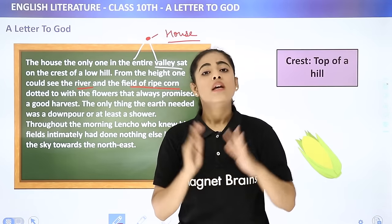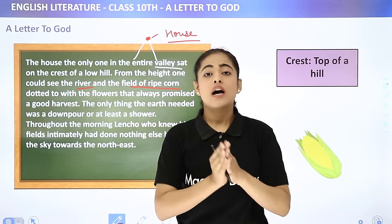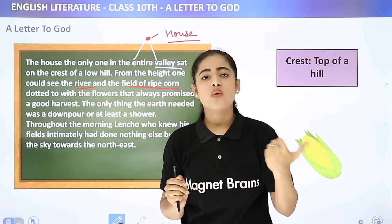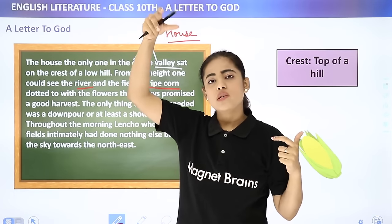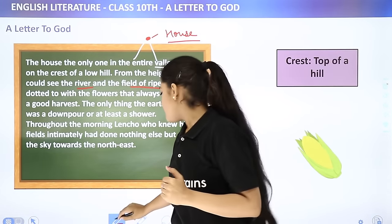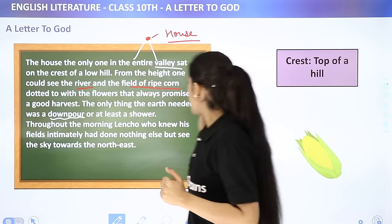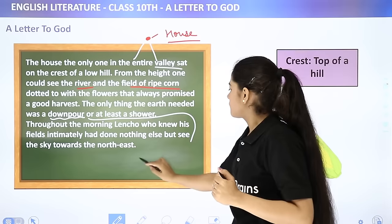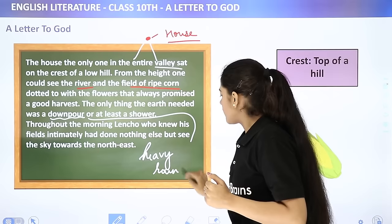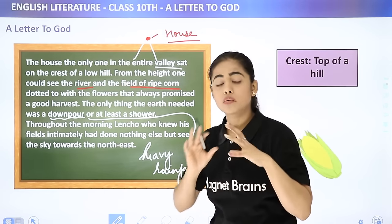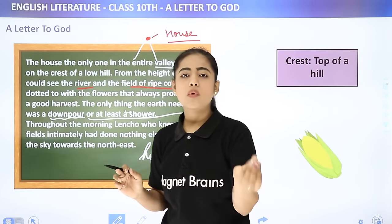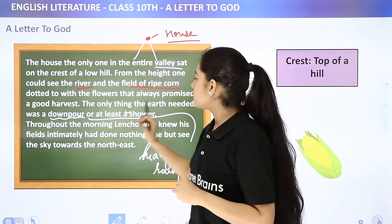But this time, the earth needed two things: either a downpour — meaning very heavy rainfall — or at least a shower, meaning at least a little bit of rain. 'Downpour' means heavy rainfall. So Lencho needs either heavy rain or at minimum a light shower for his crops.